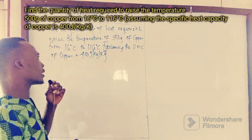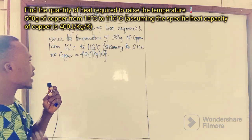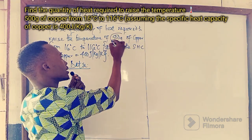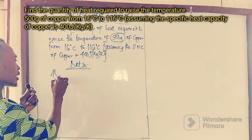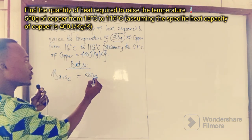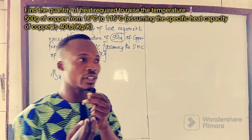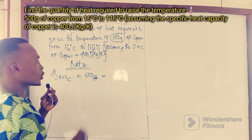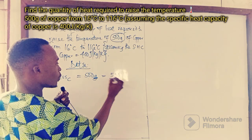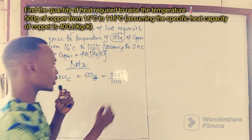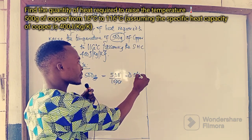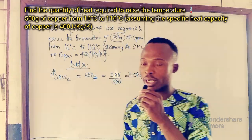What we need to do first is write our data out so we know what we have been given. The first thing we are given is the mass of copper, which is 500 grams. Now, gram is the unit of mass, and we need to convert grams to kilograms, which is the standard unit. So dividing 500 by 1000, we get 0.5 kilograms.